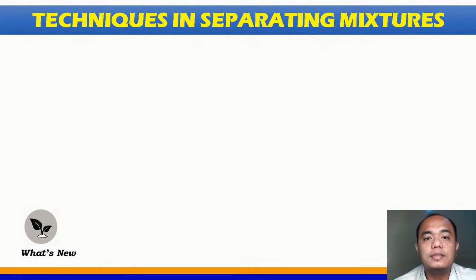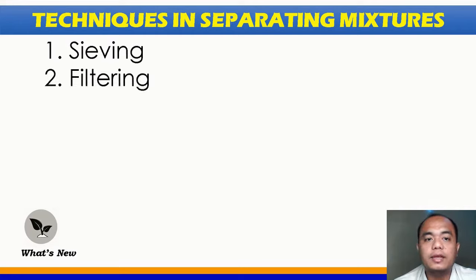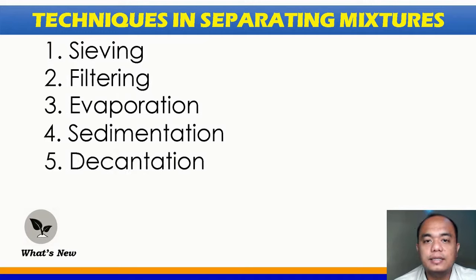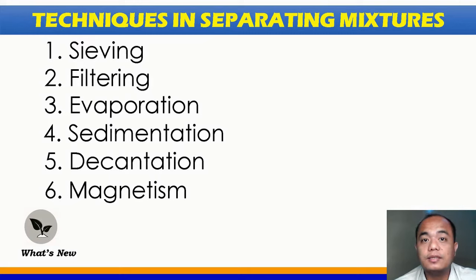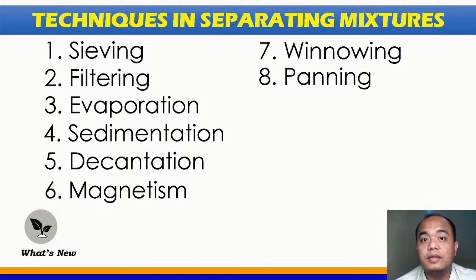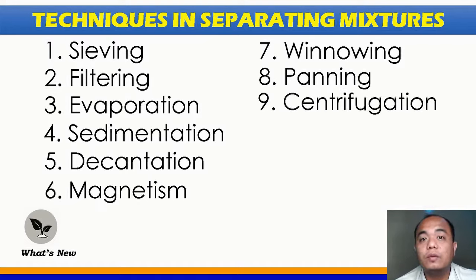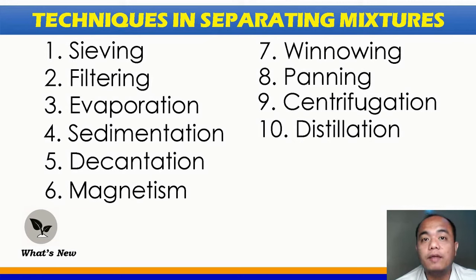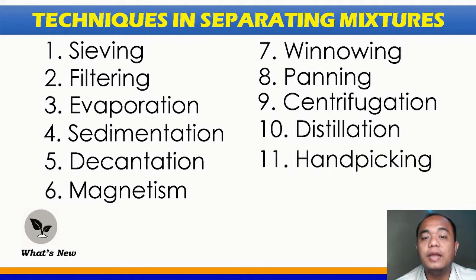To sum it up, these are the techniques in separating mixtures: sieving, filtering, evaporation, sedimentation, decantation, and magnetism. Aside from these, we have other techniques not mentioned in your module: winnowing — using wind to separate lighter materials from heavier ones, like rice grain from rice husk; panning — using a pan, especially for getting gold; centrifugation — like separating the particles of blood; distillation — evaporating water then condensing it to separate solution from impurities; and hand picking — using your hands to separate a mixture.